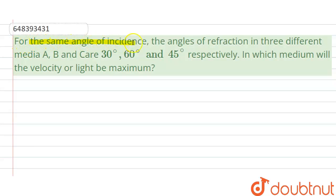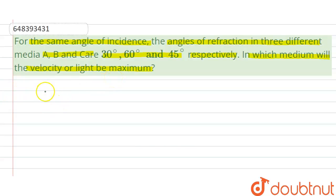For the same angle of incidence, the angle of refraction in three different media A, B, and C are 30 degrees, 60 degrees, and 45 degrees respectively. We need to find in which medium the velocity of light will be maximum. So from Snell's Law, what we know is...